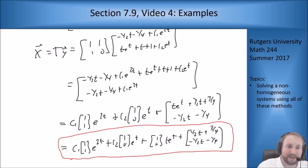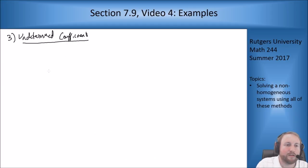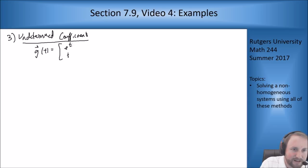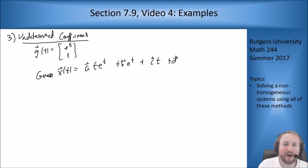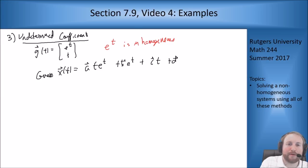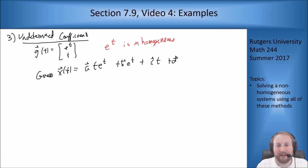Now I want to do the same thing using undetermined coefficients. My right-hand side G(t) is [e^t; t]. So what should I guess? I'm going to guess X(t) = A·t·e^t + B·e^t + C·t + D. I guess t·e^t because my homogeneous solution contains an e^t term, so I need to step up a level. I also guess B·e^t in case the vectors cancel out helpfully.